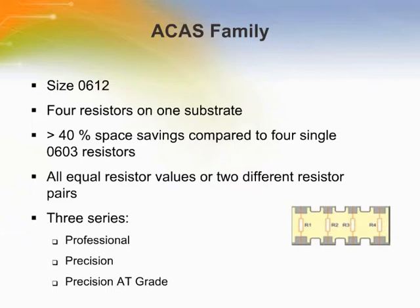The ACAS family is available in 0612 sizes. Four resistors are integrated on one substrate, which reduces board space by more than 40% using the 0612 size compared to four single 0603 resistors. Equal resistor values or different resistors can be realized, providing accurate and stable behavior. The ACAS family is divided into three series.